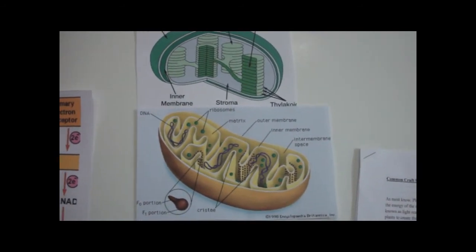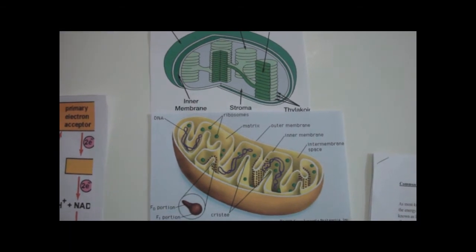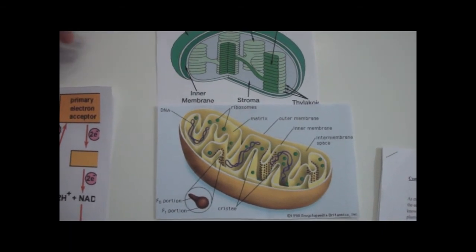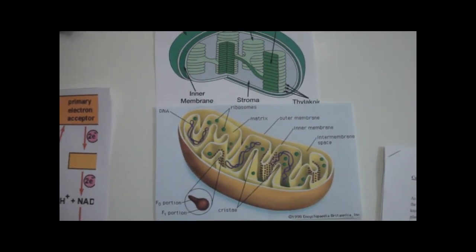Several other electron carriers in the electron transport chains are also found in both processes, such as the cytochrome complex.